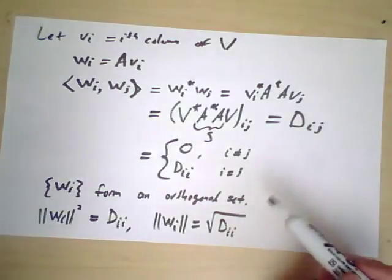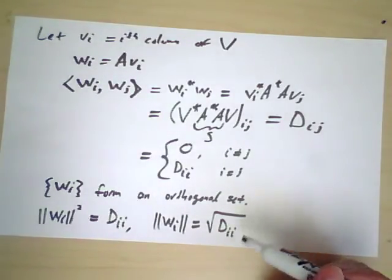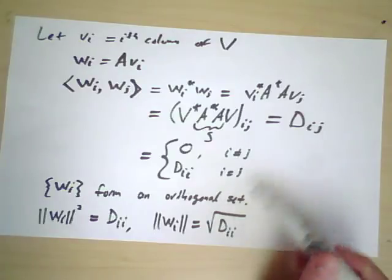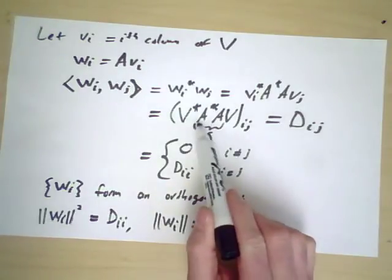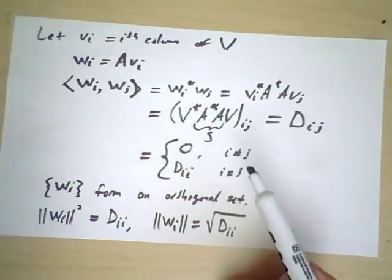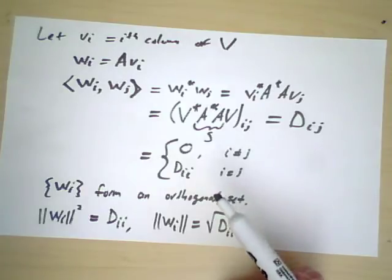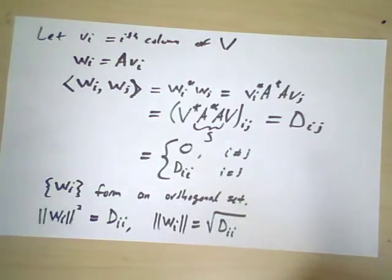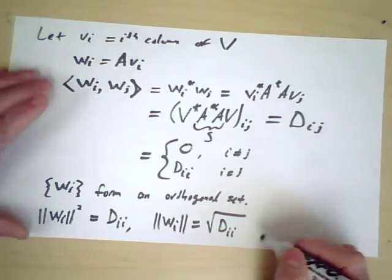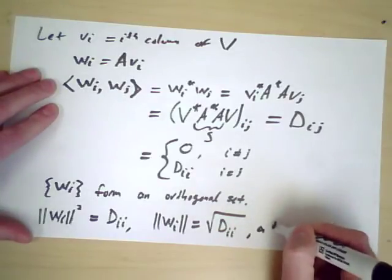This would be nonsense, except that we already established in the lemma that hopefully you spent a moment to prove that the eigenvalues of A star A are necessarily non-negative real numbers. So since they're non-negative real numbers, the square root is a sensible thing. It's always a non-negative real number.